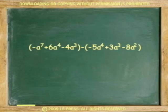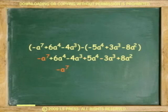One more example. Remove parentheses. Combine coefficients according to base and exponent. Answer: negative a to the seventh plus 11a to the fourth minus 7a cubed plus 8a squared.